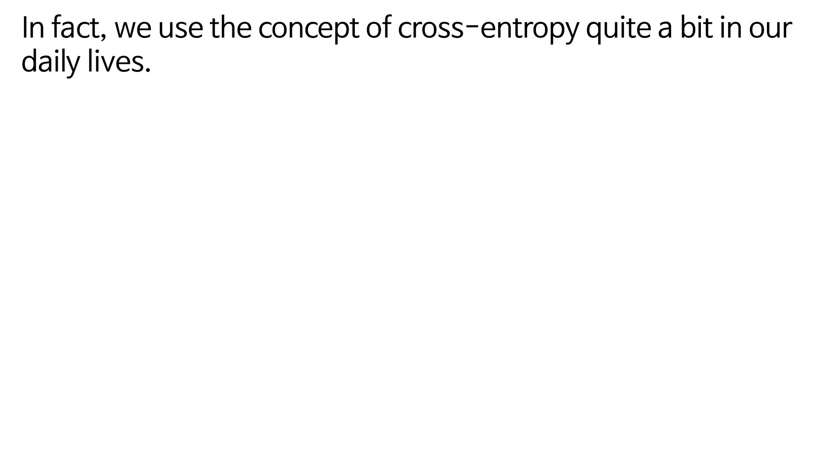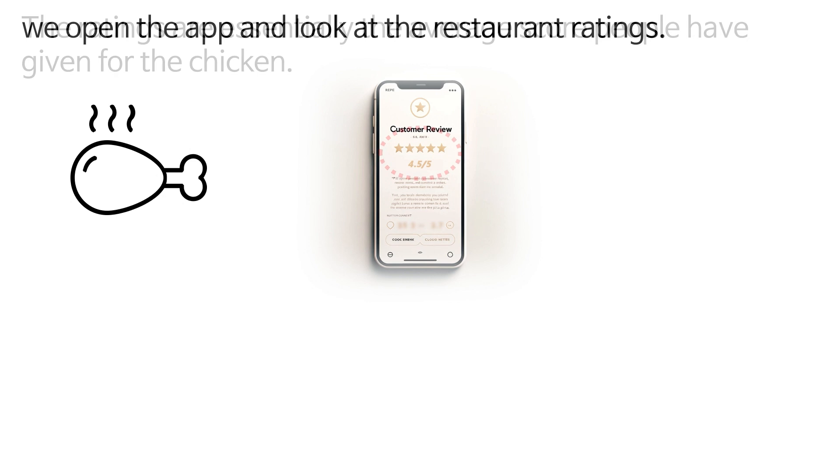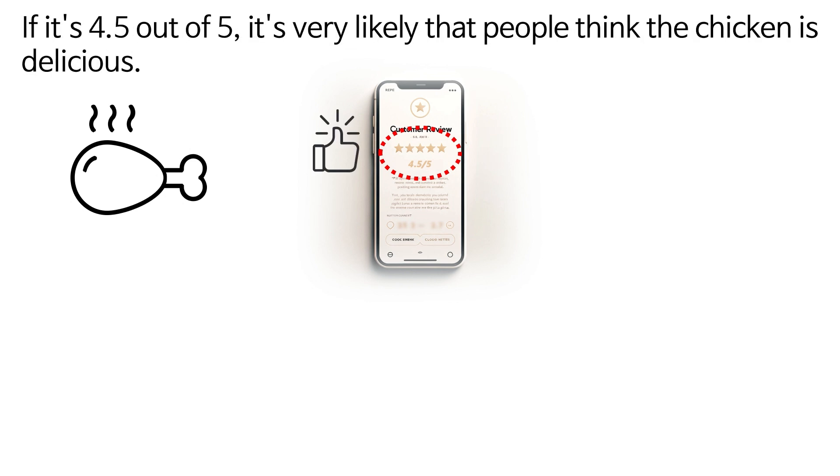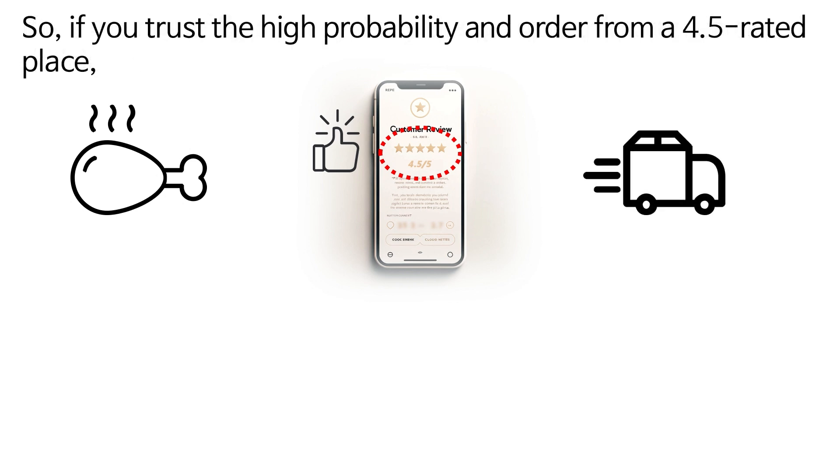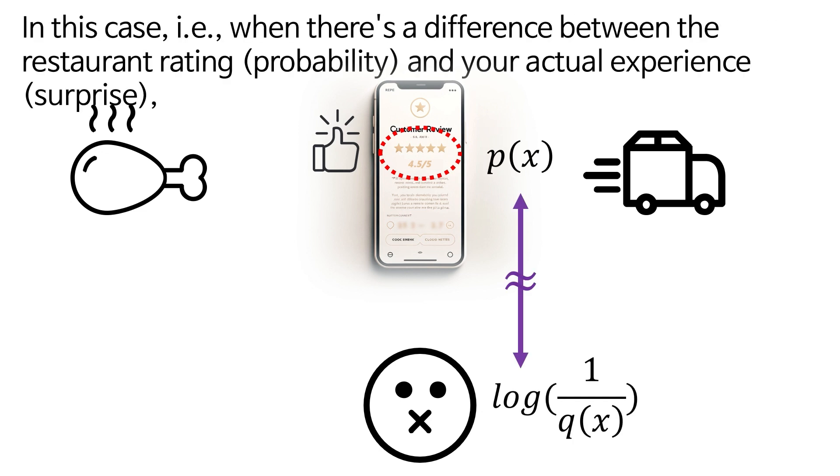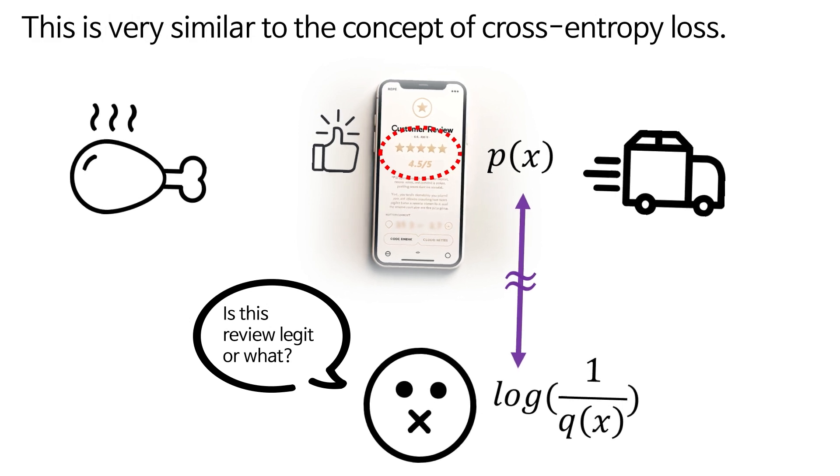In fact, we use the concept of cross-entropy quite a bit in our daily lives. For example, when we order chicken from a delivery app, we open the app and look at the restaurant ratings. The ratings are essentially the average score people have given for the chicken. If it's 4.5 out of 5, it's very likely that people think the chicken is delicious. So, if you trust the high probability and order from a 4.5 rated place, but then you receive the food and it's not what you expected. In this case, when there's a difference between the restaurant rating and your actual experience, we feel discomfort. This is very similar to the concept of cross-entropy loss.